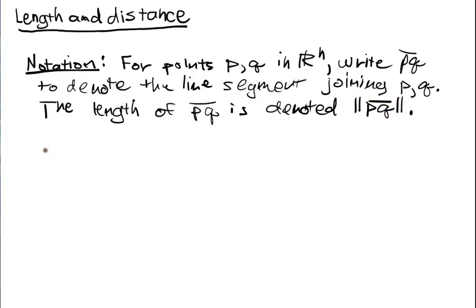So this is actually going to be in correspondence with what we'll call the magnitude of the vector PQ arrow. And that's denoted similarly.